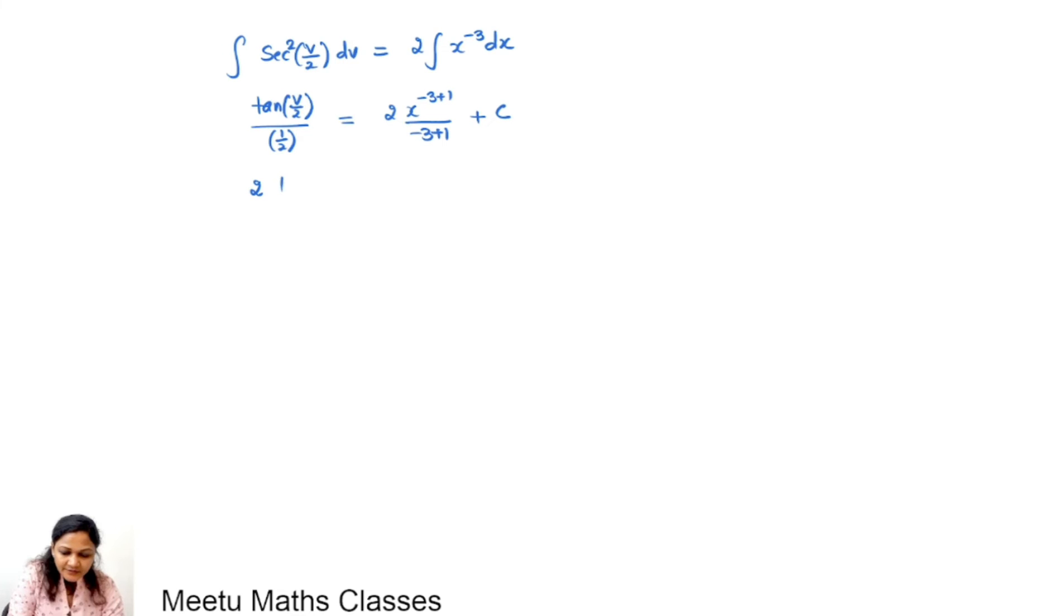So this will become 2 tan v by 2 equals, this is minus 2, 2 will cancel out. So minus 1 upon x square plus c. Or now we can replace v by y by x. And this will be your general solution.